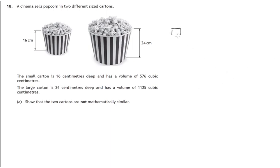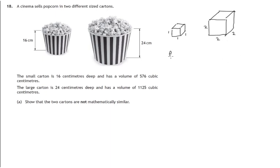Let's look first at what we mean by scale factors for mathematically similar objects, because that's going to be the key to solving this question. Here's a cube: one centimeter by one centimeter by one centimeter, and we've doubled all the lengths to get two centimeters by two centimeters by two centimeters. If we look at what happens to the lengths between the two, all the lengths in this larger, mathematically similar solid have been doubled. And the volume of the second one? If you count the number of cubes now in it, you'll see that there are eight cubes.